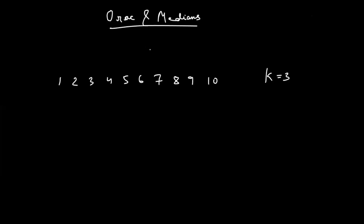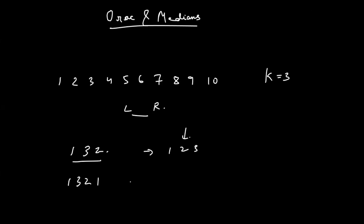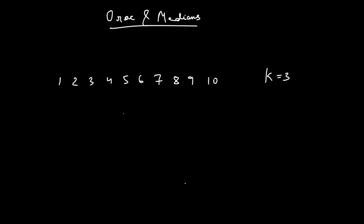The problem states that you'll be given an array and you can choose any range L to R. In that range, whatever is the median of those elements, you replace every element in that range by that number. The median for an odd number of elements is the middle element after sorting. For an even number of elements, they say take floor of (n+1)/2, so for one and two the median would be one. You can choose any range L to R any number of times.